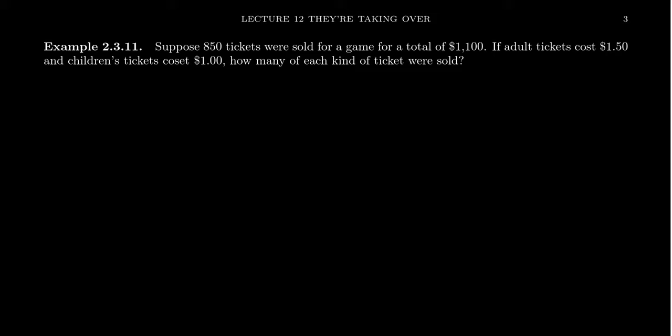Suppose that 850 tickets are sold for some game, and the ticket revenues make the school $1,100. We know that adult tickets are sold for $1.50 and children tickets were sold for $1. Could we then determine how many adult tickets were sold and how many children tickets were sold? Maybe there's a football game at the local high school and they charge for tickets. We know that 850 people came and the school made $1,100 in revenue. But how many adults and how many children are coming?